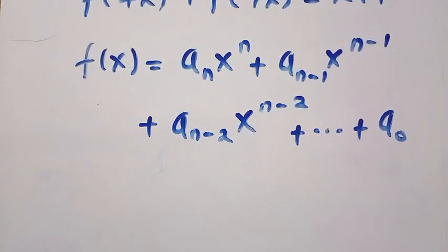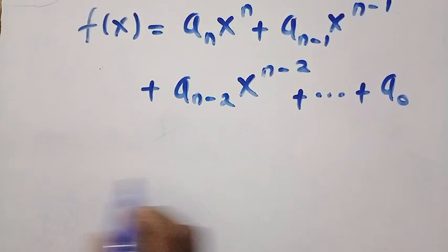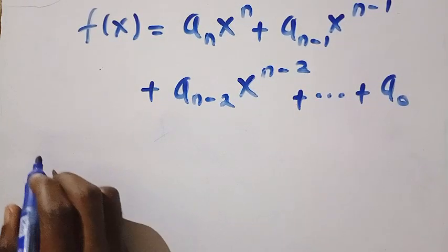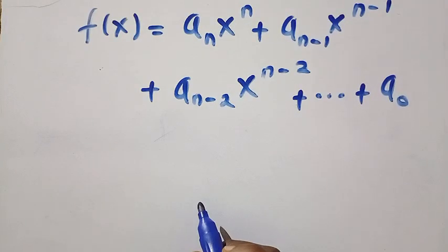Then after getting this, we need f of 4x and we need f of 7x. So we just try and replace them. So replacing them we have, before we replace them, we have this as power of 1, that is n will be equal to 1. So if n equals to 1, then the next one will be n equals 0. So let's reduce that first.